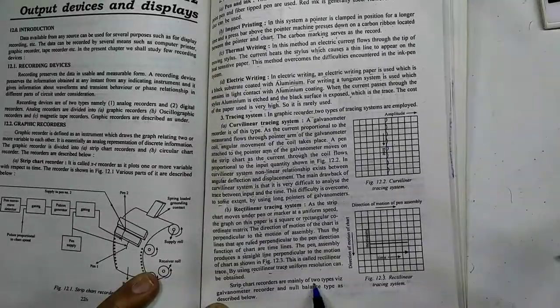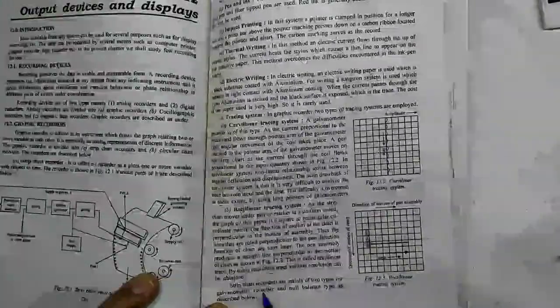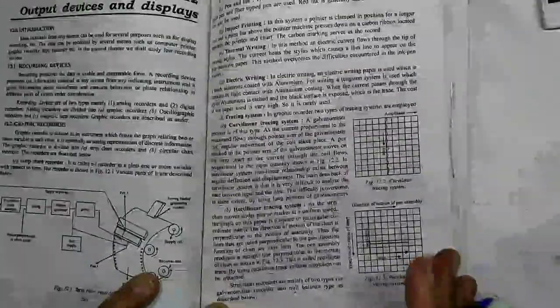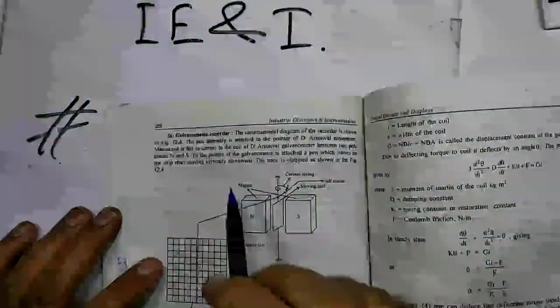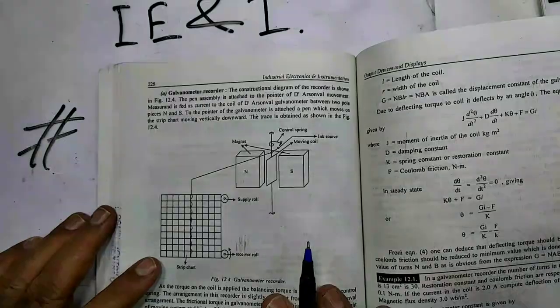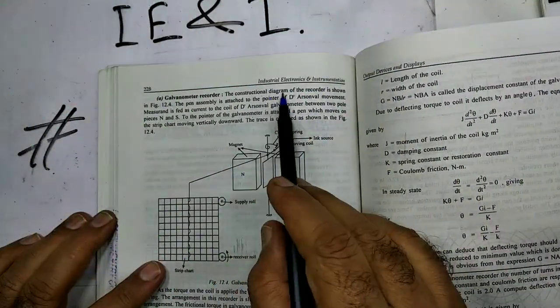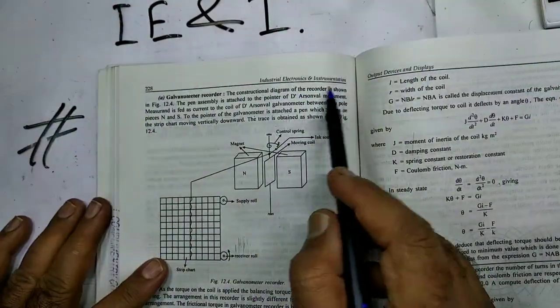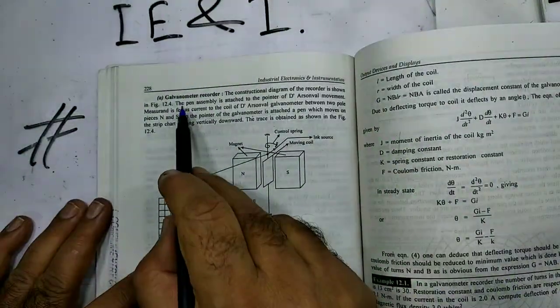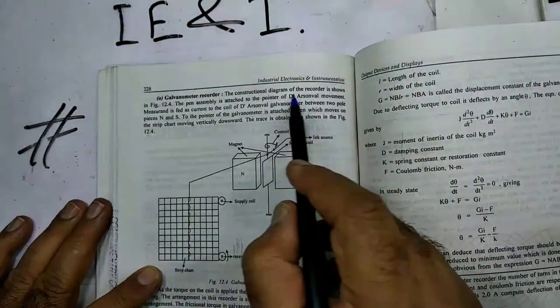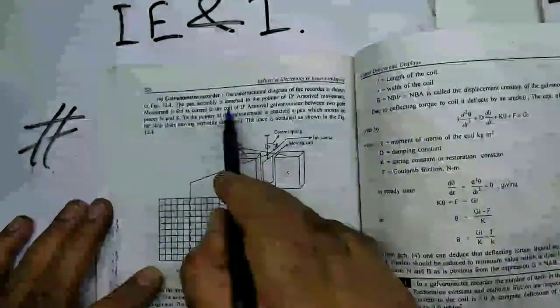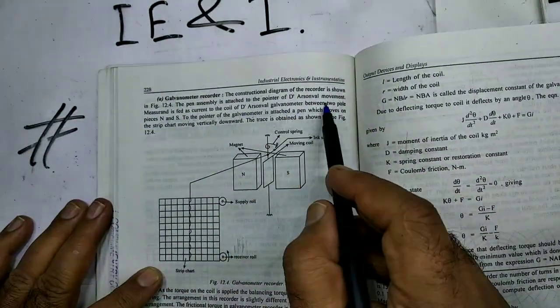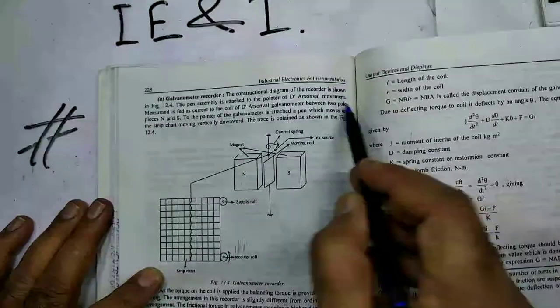Strip chart recorders are mainly of two types, that is galvanometer and null balance type. We can see this is the galvanometer type of strip chart recorder. The constructional diagram of recorder is shown in the figure. The pen assembly is attached to the pointer of D'Arsonval movement.